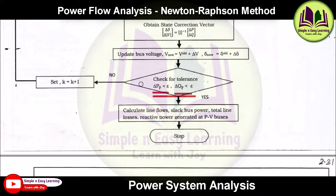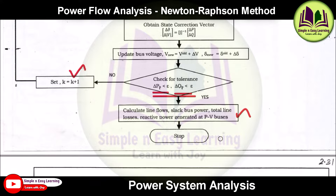Check for convergence. If not converged, increase the iteration count to k = k+1 and repeat the procedure. Once delta_Pp and delta_Qp are both less than epsilon, calculate the line flows, slack bus power, total line losses, and reactive power generated at PV buses, then print the results and end the algorithm.